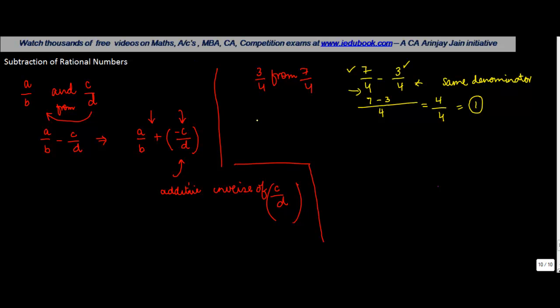So let us see. Let's say, suppose, you had to subtract 3 upon 4 minus 1 upon 7. Now, just like I told you, this minus sign can be converted into plus, by writing 3 upon 4 plus the additive inverse of 1 upon 7, which is minus 1 upon 7.